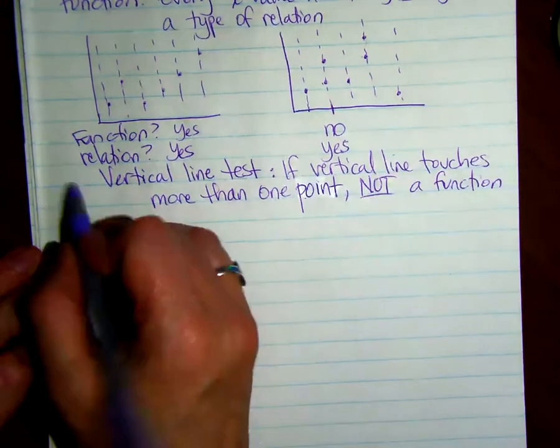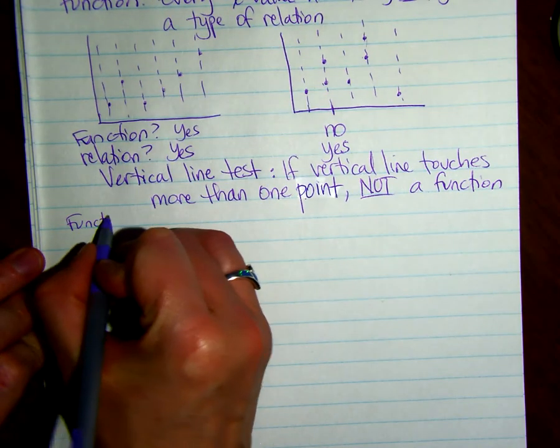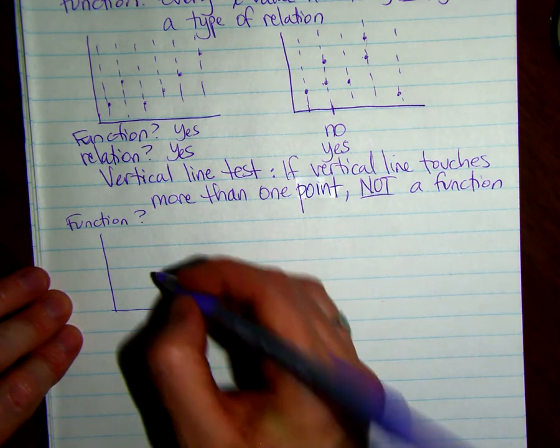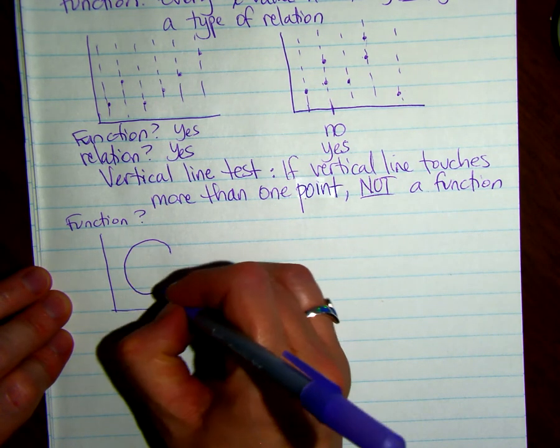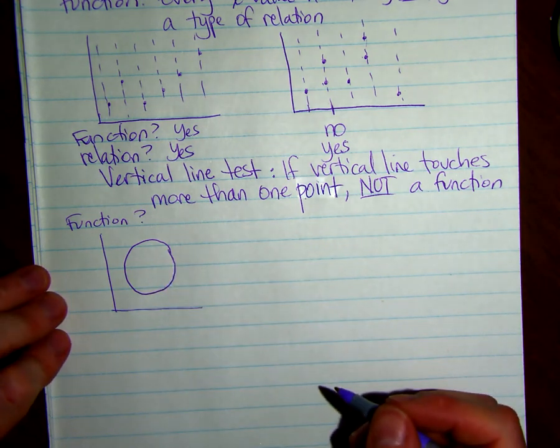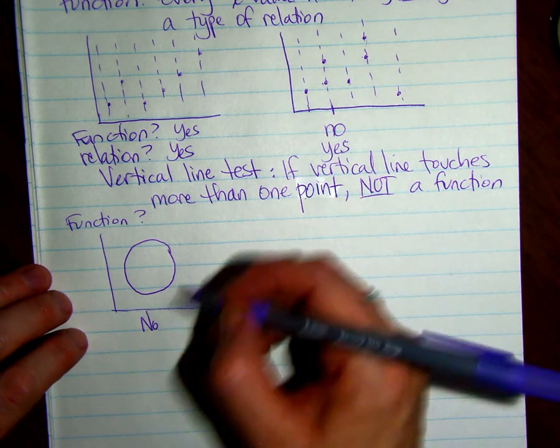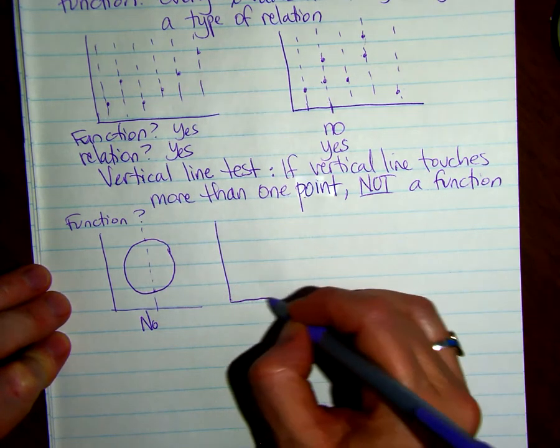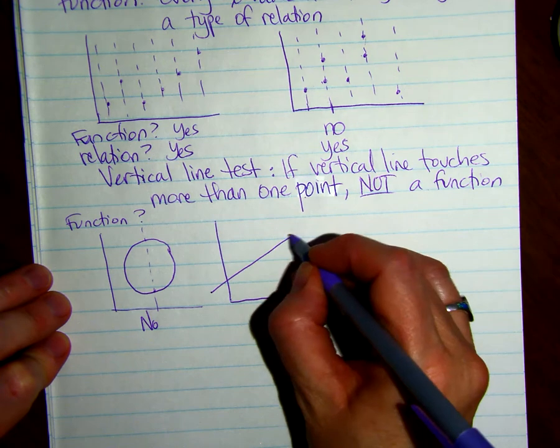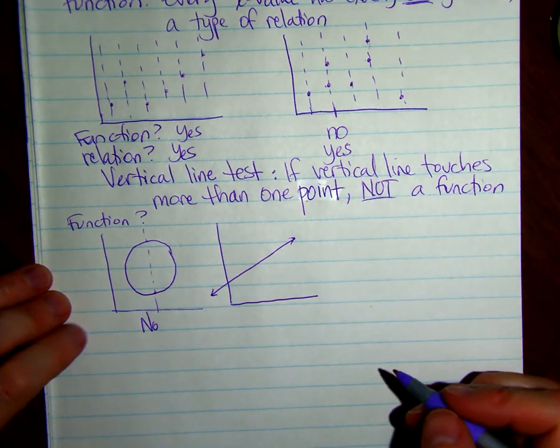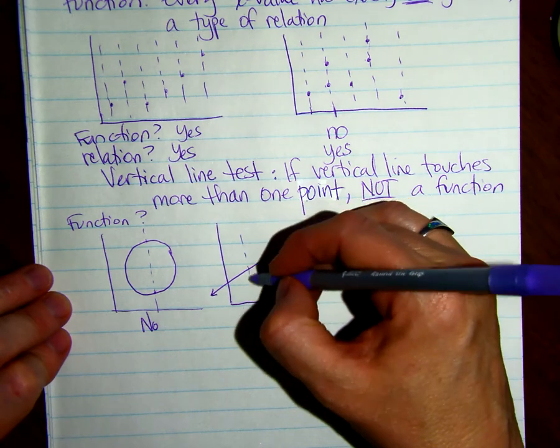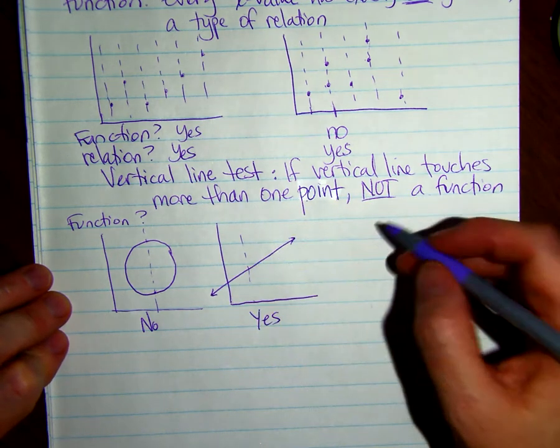Okay, so let's do some examples. So I want to know, is this a function or not? So is this a function? Nope, because if you drew a vertical line, it would go through two points. How about this one? Function? Yes, because if you draw a vertical line, no matter where you draw it, it's going to go through one point.